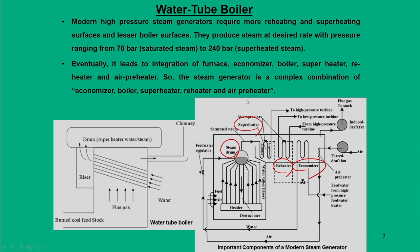Modern steam generators operate at very high pressures — in the range of 70 bar for saturated steam and 240 bar for superheated steam. The steam generator is nothing but the integration of different components: furnace, economizers, boiler, superheaters, reheater, and air preheater.